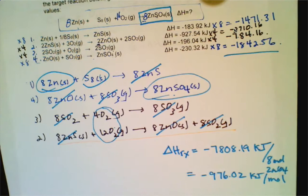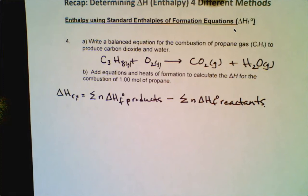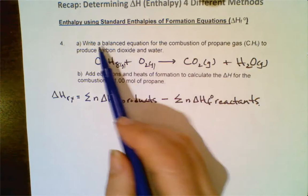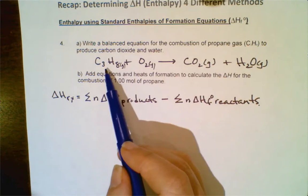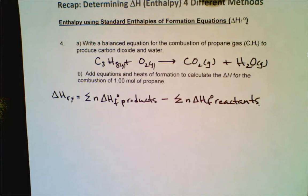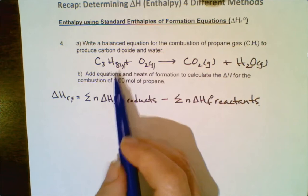The last method is standard enthalpies of formation. When using this method, you first want to start with a balanced equation. Here they're telling you you are undergoing combustion of propane gas, producing carbon dioxide and water — remember combustion means plus oxygen. I've noted they are all gases. Balancing per one mole of propane because the question asks us to calculate delta H per one mole.